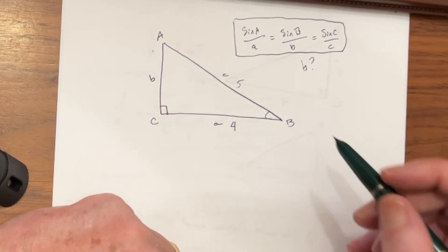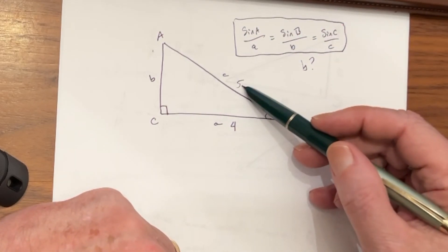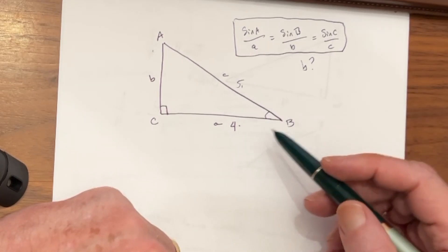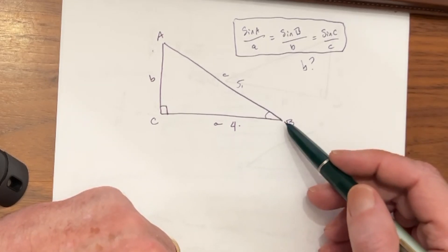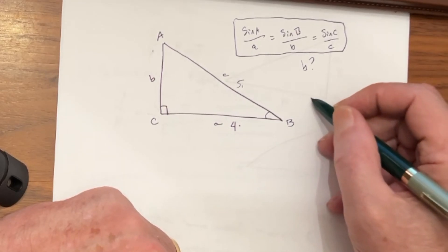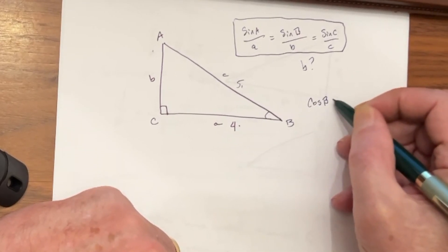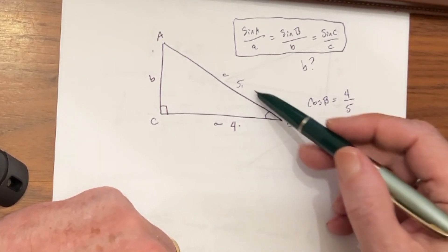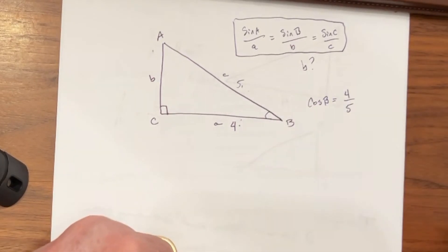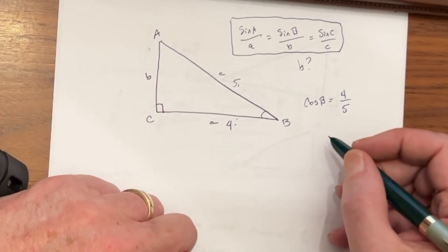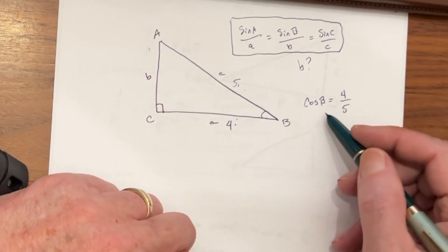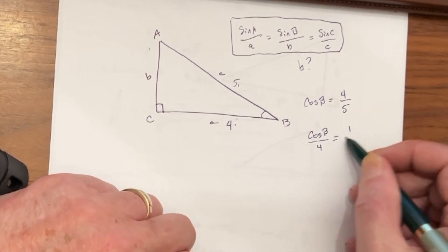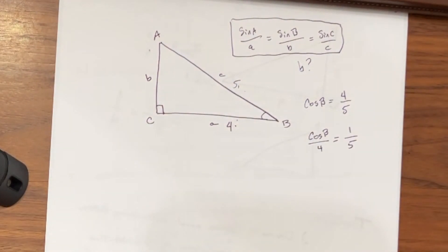We want to work with what we have available. We know a value for the hypotenuse and we know a value for the adjacent side, and that's enough to find the cosine of angle b. The cosine of angle b will equal 4 over 5 — the adjacent side over the hypotenuse. We're going to solve this by proportion, dividing both sides by 4, giving us cosine of b over 4 equals 1 over 5.